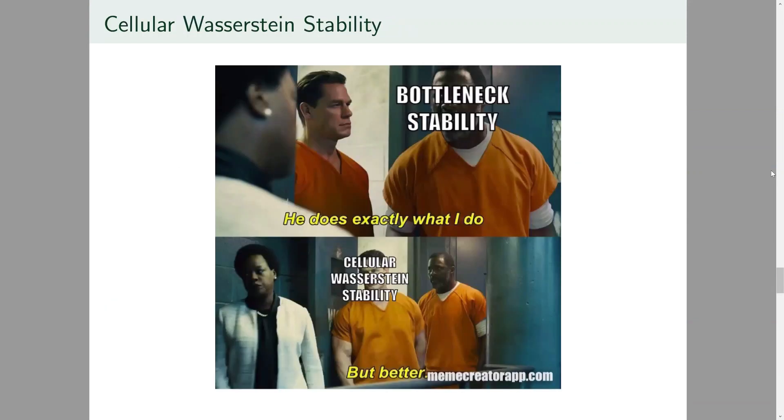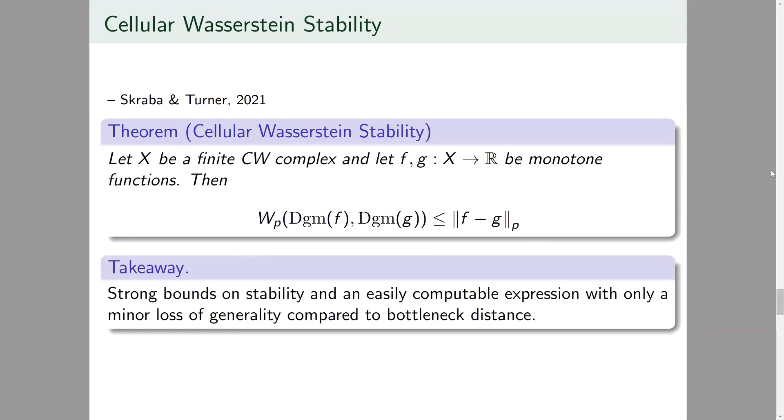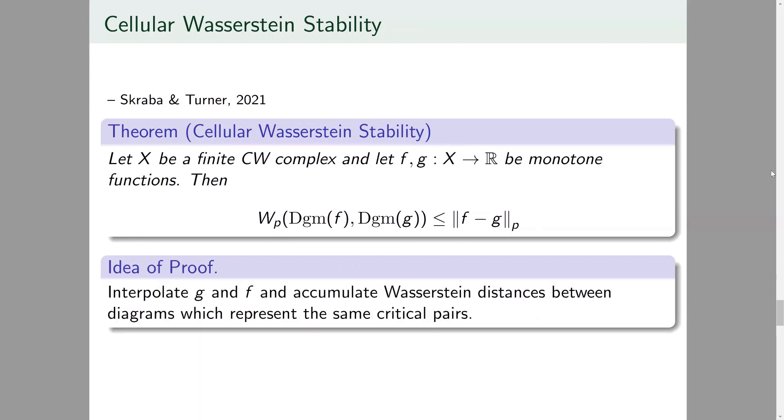And that brings us to our final newest major result in the stability of persistent homology: Cellular Wasserstein stability which yields a very similar result to bottleneck stability but now applies to Wasserstein distances. Cellular Wasserstein stability provides strong bounds on stability owing to the presence of Wasserstein distance. It's also easily computable as long as you have a good way of computing LP distances for large data sets and only for a slight loss of generality on bottleneck stability. The proof outlined in the original paper is also remarkably simple to follow. The idea being to take a linear interpolation of two monotone functions that essentially ignores difficulties arising from infinitely choosing bijections when critical pairs change. In fact this proof method has also been used to prove bottleneck stability under the same hypothesis simply by limiting p to infinity.